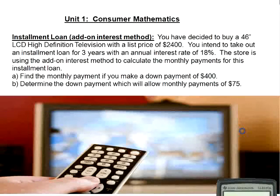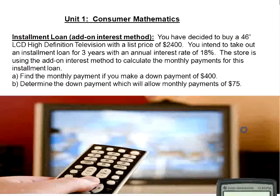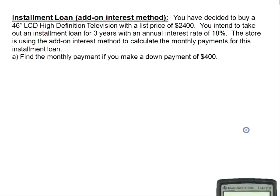P is the amount you are financing, R is the annual rate, and T is the time in years. Let's look at an example. You have decided to buy a 46-inch LCD high-def television with a list price of $2,400. You intend to take out an installment loan for three years with an annual rate of 18%, and the store is using the add-on interest method. Question A: find your monthly payment if you make a down payment of $400. Question B: how much do you need to pay down today in order to get your monthly payments down to $75 a month?